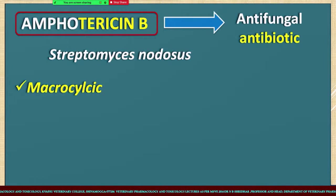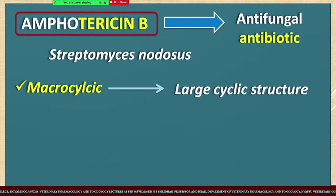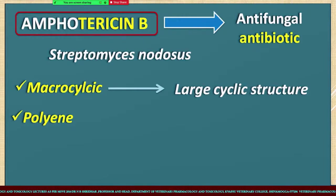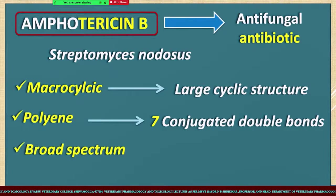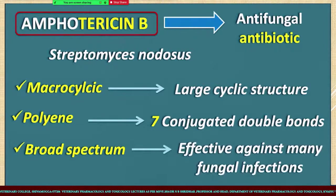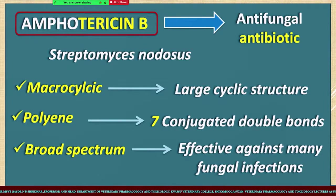Amphotericin B is also called a macrocyclic compound because it has a large cyclic structure. Second, it is a polyene antibiotic - polyenes are compounds having conjugated double bonds, and Amphotericin B has seven conjugated double bonds. Another polyene antifungal is nystatin, used only for topical fungal infections. Third, Amphotericin B is a broad-spectrum antifungal antibiotic effective against various types of fungal infections, but it is not orally available due to poor absorption and is mainly given intravenously.